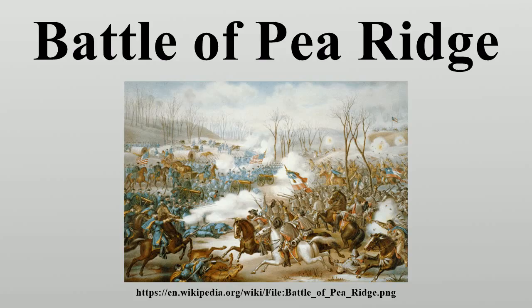When Van Dorn's advance guard blundered into one of these patrols near Elm Springs, the Federals were alerted. Still, Sigel was so slow in evacuating Bentonville that his rear guard was nearly snared by Van Dorn on March 6, waiting until the Confederate advance was nearly upon him. Sigel ordered his 600 men and six guns to fall back on a road leading northeast toward Curtis' position. The 1st Missouri Cavalry led by Elijah Gates attacked from the south to cut off Sigel's retreat. Gates' men surprised and captured a company of the 36th Illinois, but many were freed when Sigel's withdrawing men unexpectedly bumped into the group.